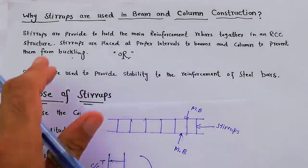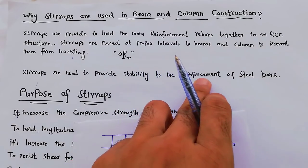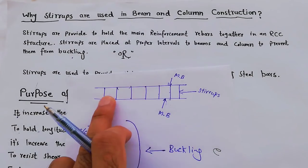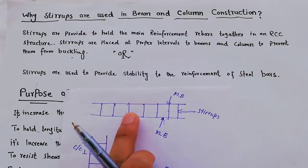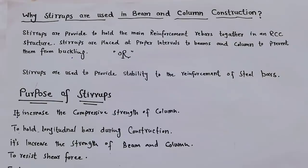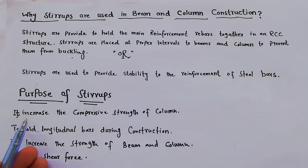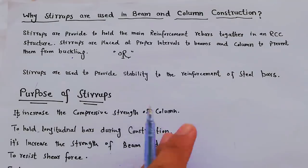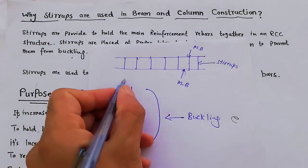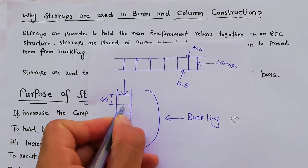Stirrups are used to provide stability to the reinforcement steel bars when we provide them in column and beam. The purpose of stirrups includes increasing the compressive strength of the column — when a load comes on the column, it wants to shear the column, so stirrups resist that.